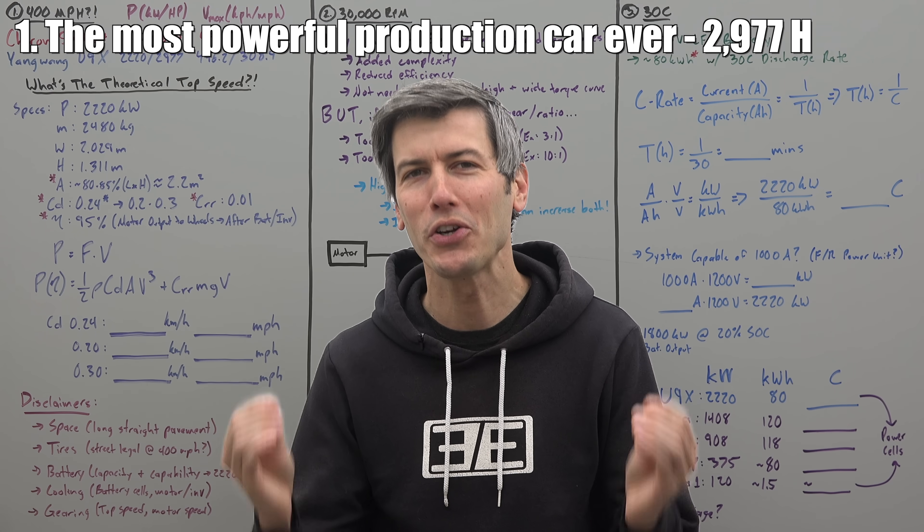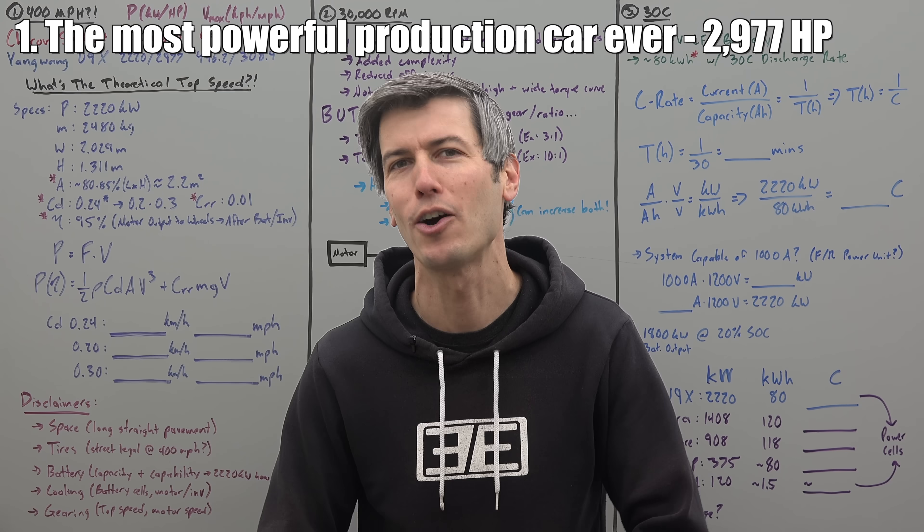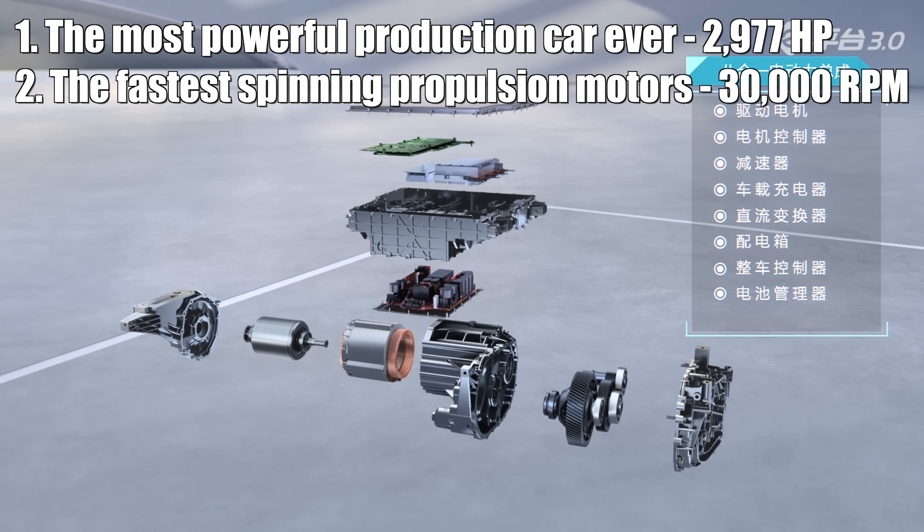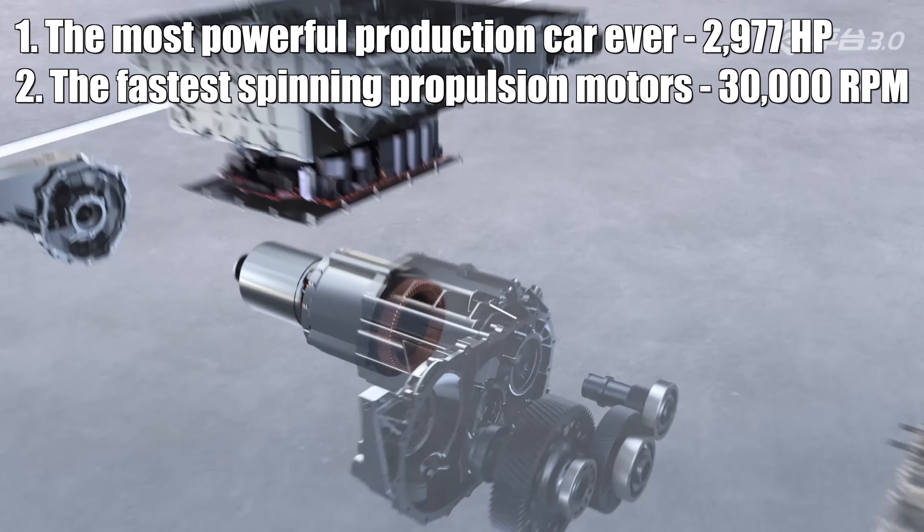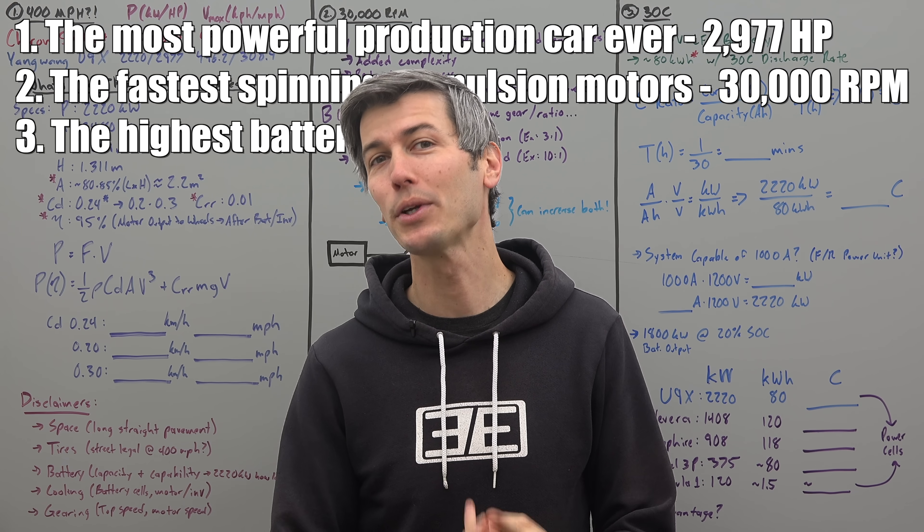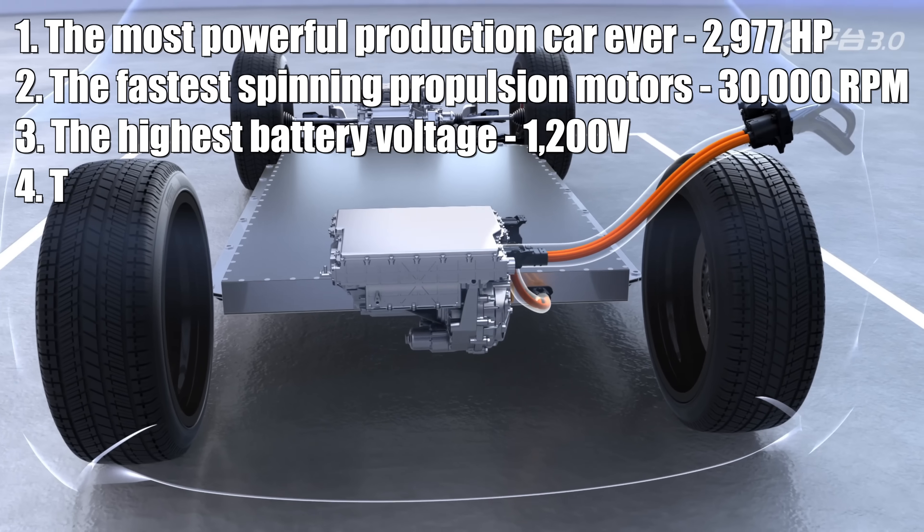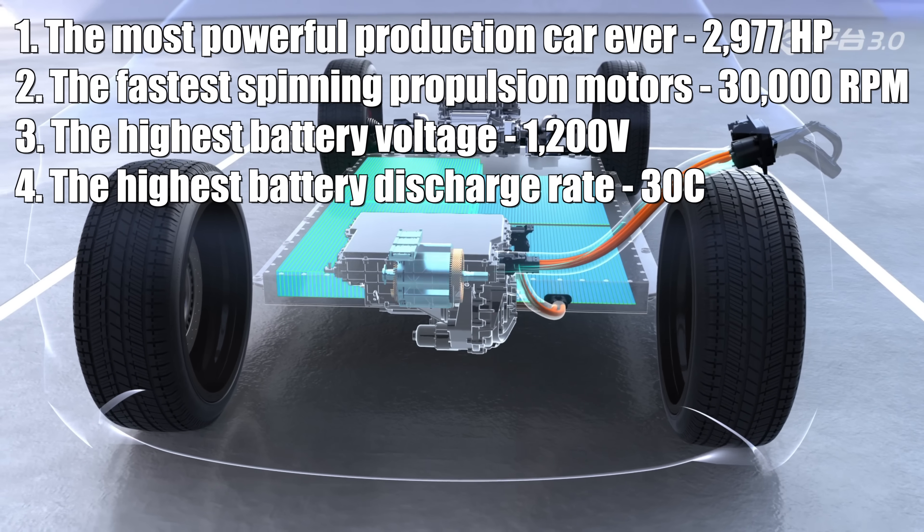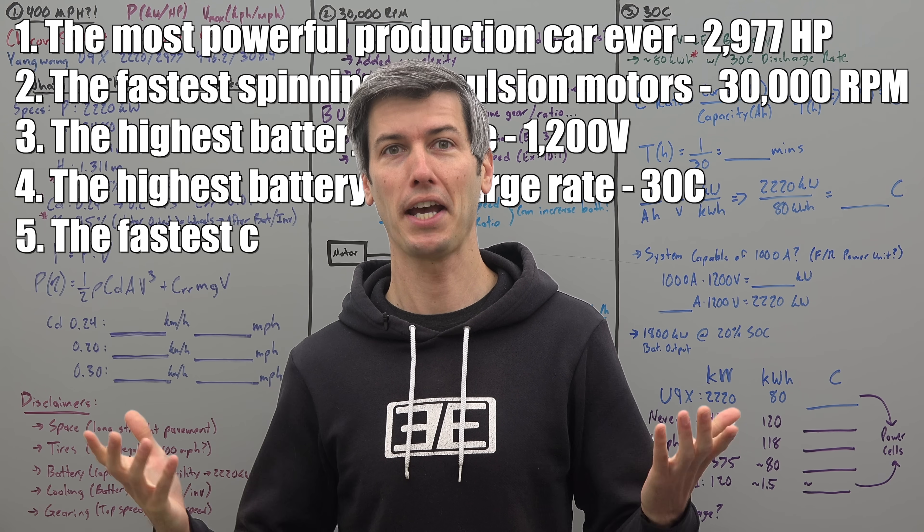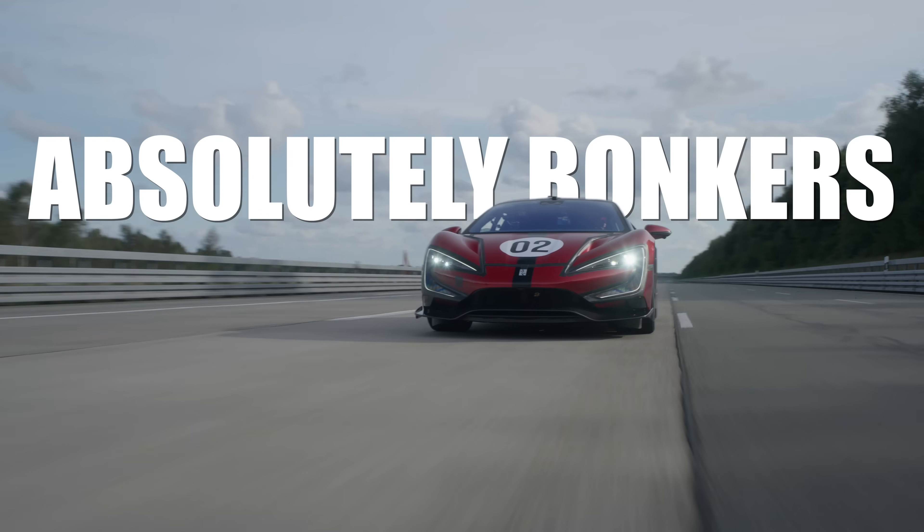It's the most powerful production car ever, just shy of 3,000 horsepower. It has the fastest spinning electric propulsion motors for an electric vehicle at 30,000 rpm. It has the highest battery voltage for an electric vehicle at 1,200 volts. It has the highest discharge rate for an electric vehicle's battery at 30c. And it looks to be the fastest car in the world, too. Absolutely bonkers.